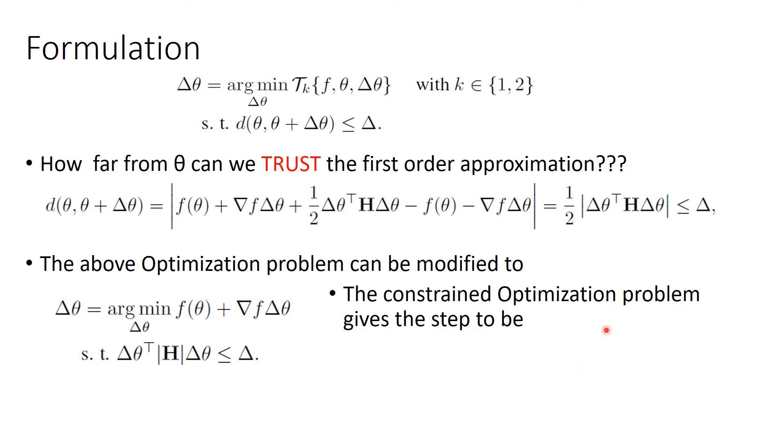The constraint optimization problem gives the step to be this expression. This optimization is intractable in high dimension problem because inverse of Hessian matrix in high dimension is intractable.